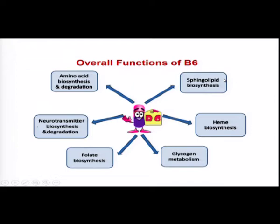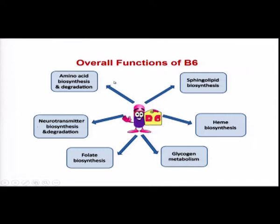Looking at the overall functions of pyridoxin: sphingolipid biosynthesis is connected with neurologic health; heme biosynthesis relates to hemoglobin and oxygen transport, so deficiency may cause anemia conditions; glycogen metabolism — glycogenolysis and glyconeogenesis — requires enzymes dependent on pyridoxin; folate biosynthesis; neurotransmitter biosynthesis and degradation; and all amino acid biosynthesis. The role of pyridoxin is quite essential — without it most of the metabolic functions would not happen.